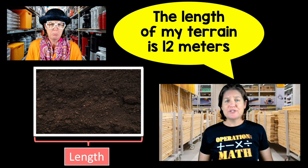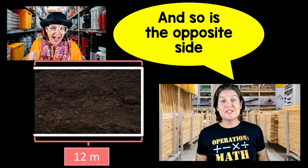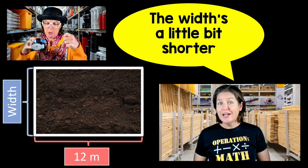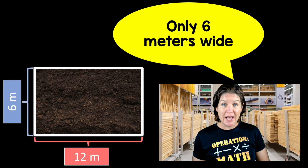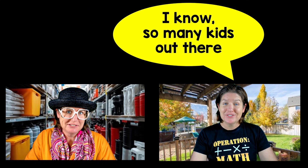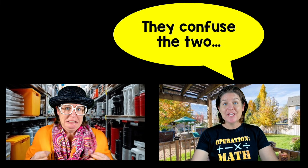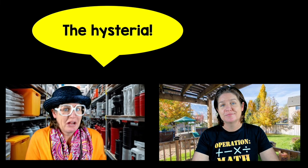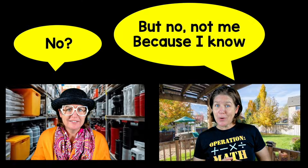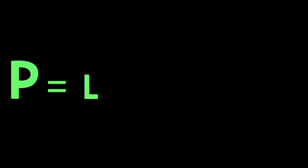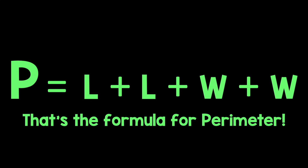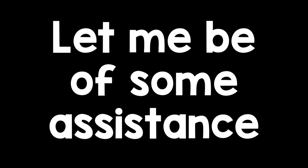The length of my terrain is 12 meters, and so is the opposite side, though it's a little bit shorter — only six meters wide. So we've got perimeter and area. Which one's perimeter and which is area? So many kids out there confuse the two, but not me — because I know P equals L plus L plus W plus W. That's the formula for perimeter.